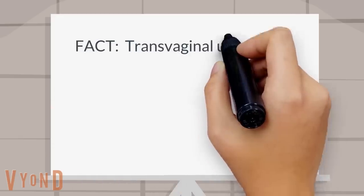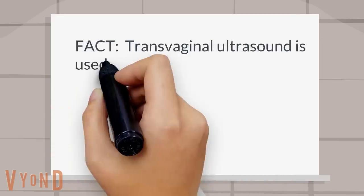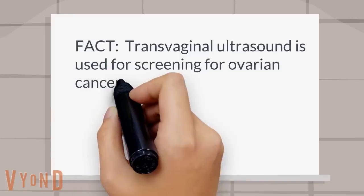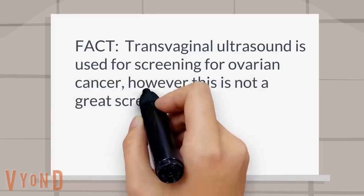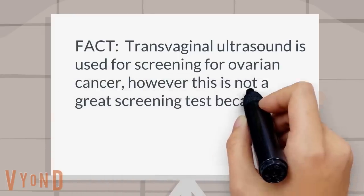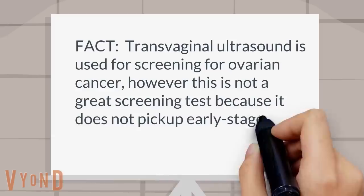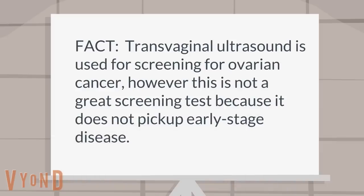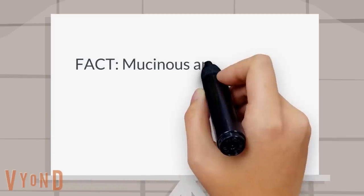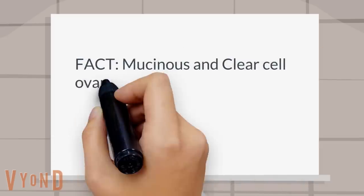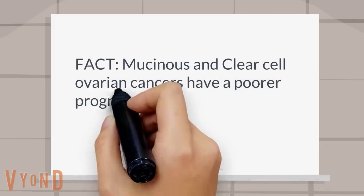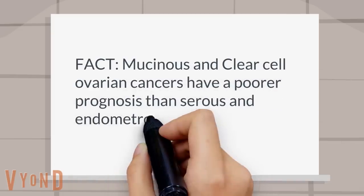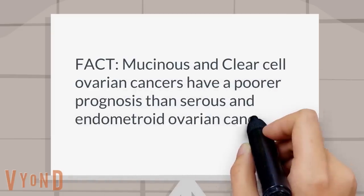Fact: Transvaginal ultrasound is used for screening for ovarian cancer; however, this is not a great screening test because it does not pick up early stage disease. Fact: Mucinous and clear cell ovarian cancers have a poorer prognosis than serous and endometrioid ovarian cancer.